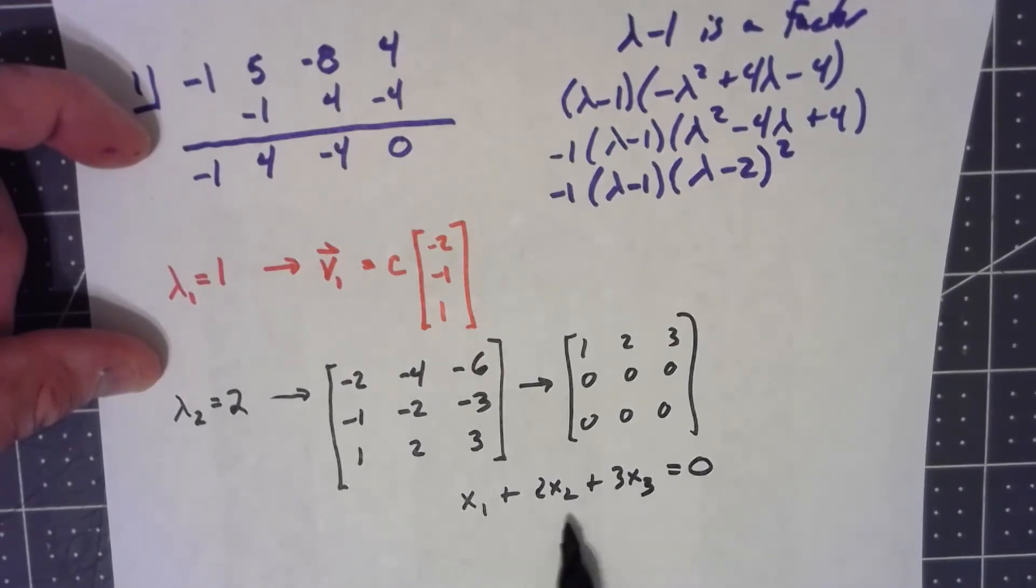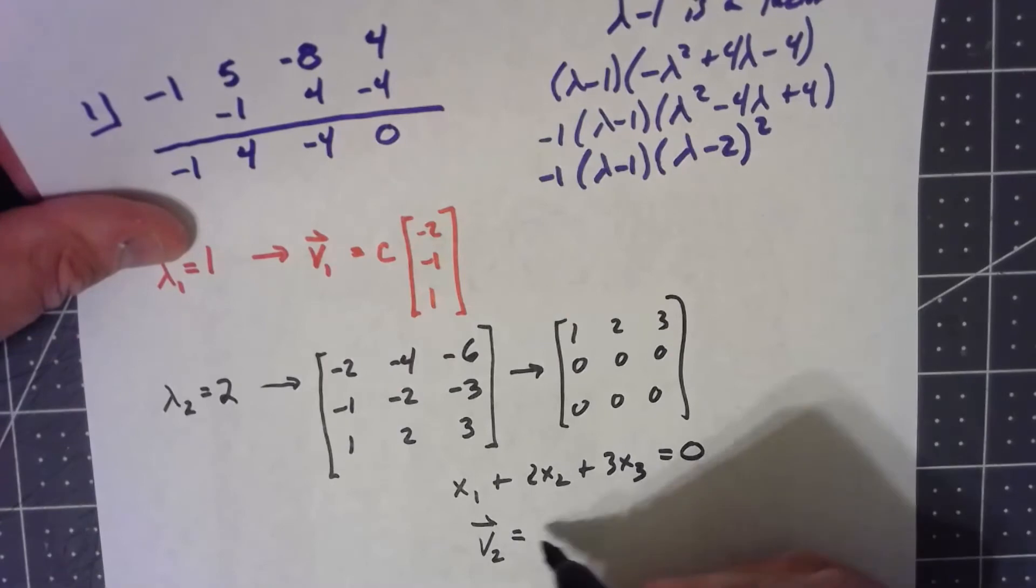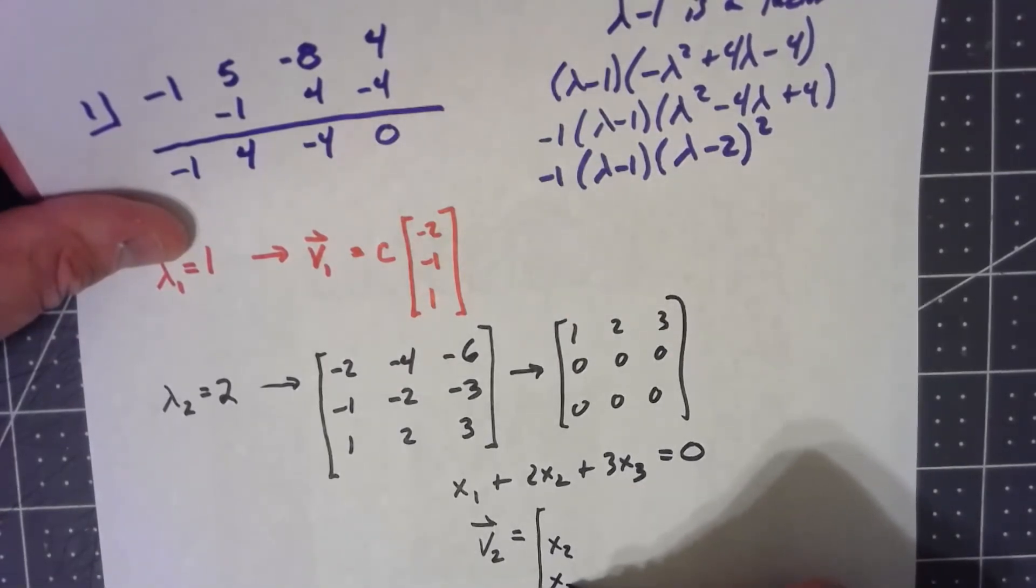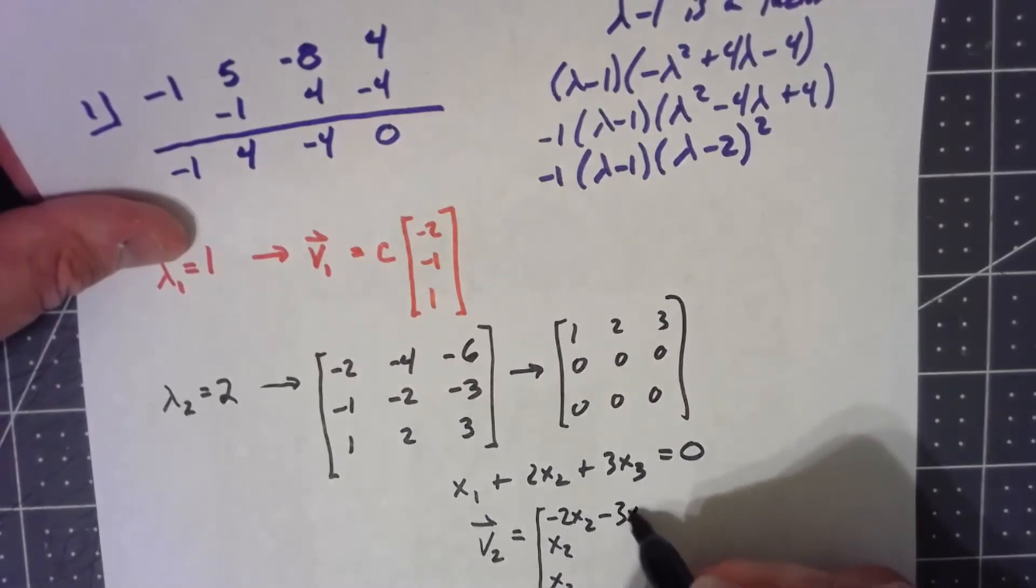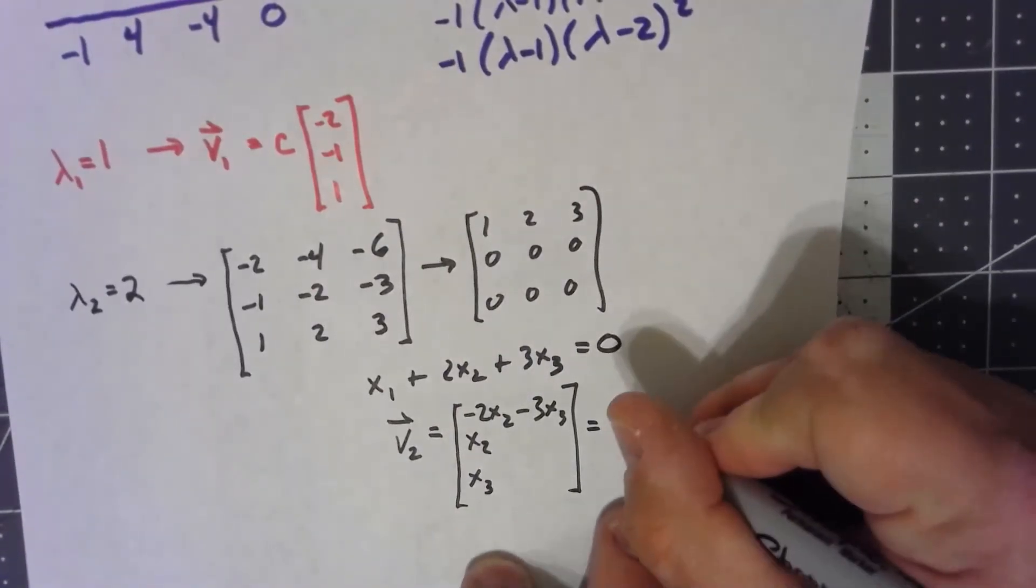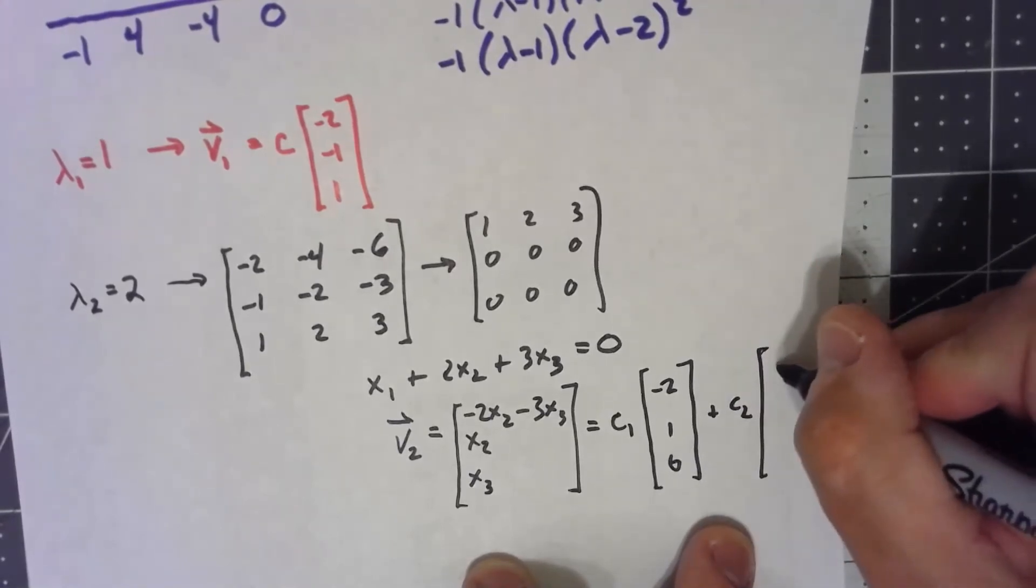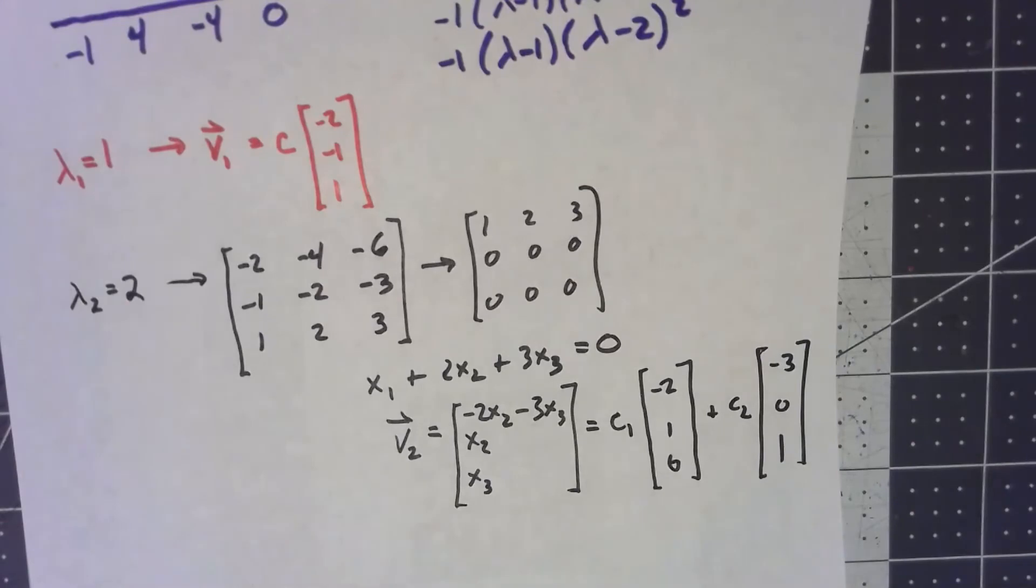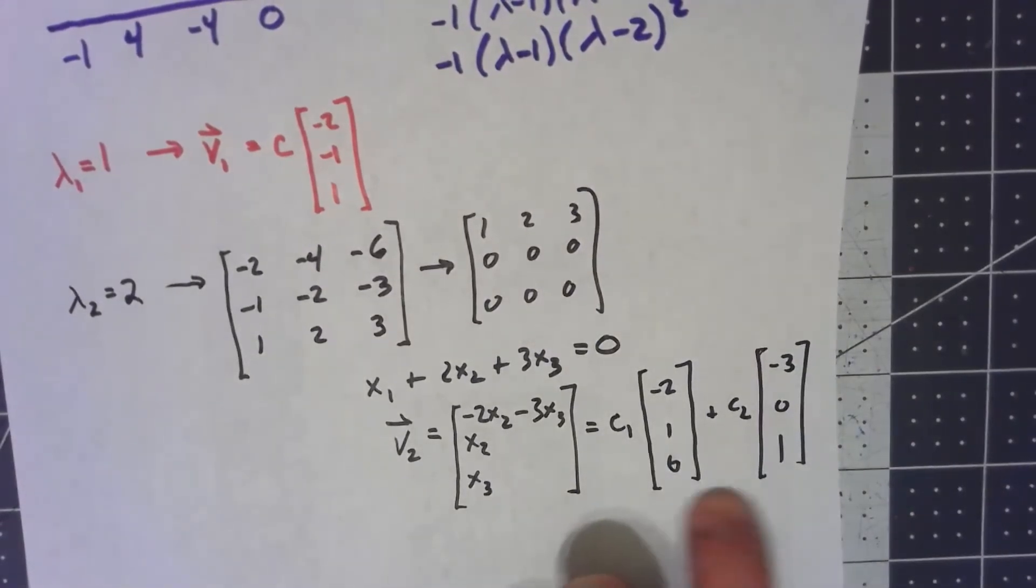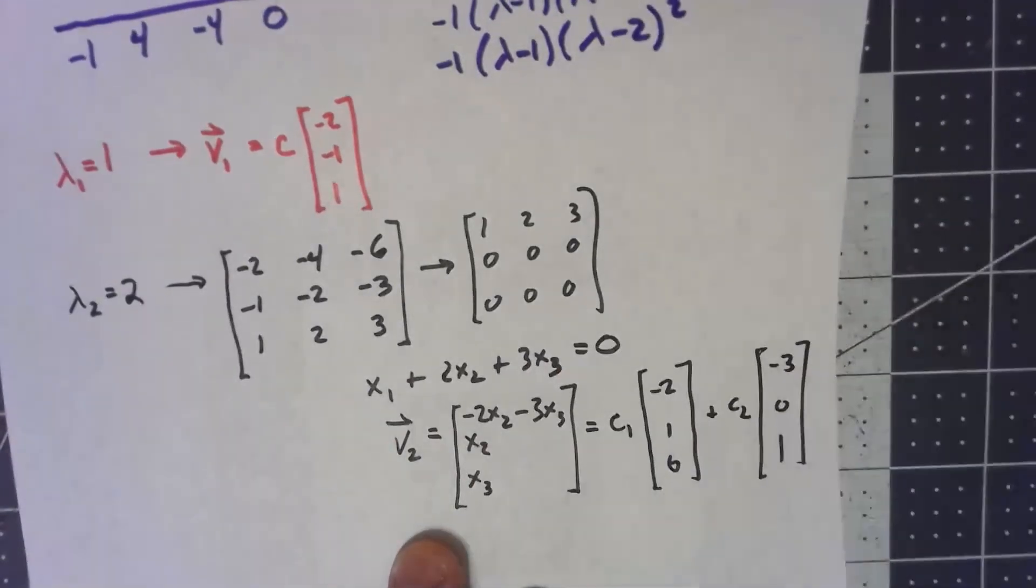That means that x2 and x3 are both free variables. So we can say that my eigenvector here is of the form: x2 and x3 are free, and that would make x1 negative 2x2 minus 3x3. But that means that we have a constant times [-2, 1, 0], plus another constant times [-3, 0, 1]. Which means we actually have two distinct eigenvectors for that eigenvalue. We actually have found three different linearly independent eigenvectors for this thing.